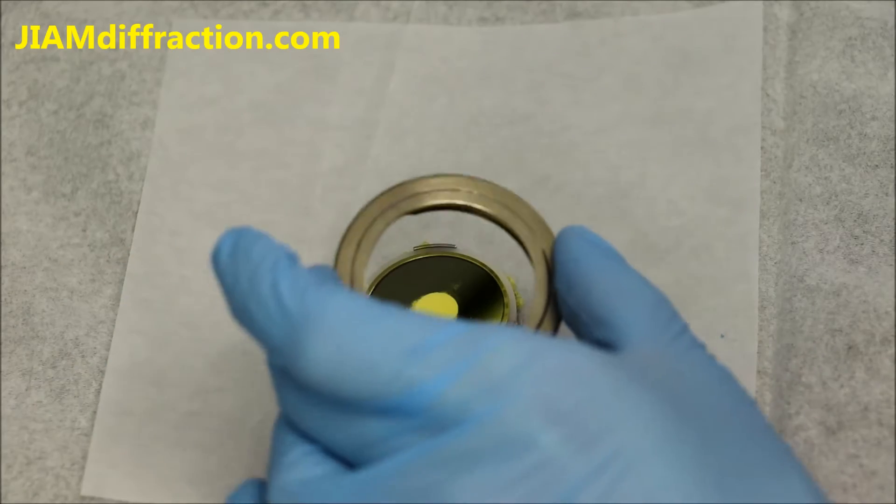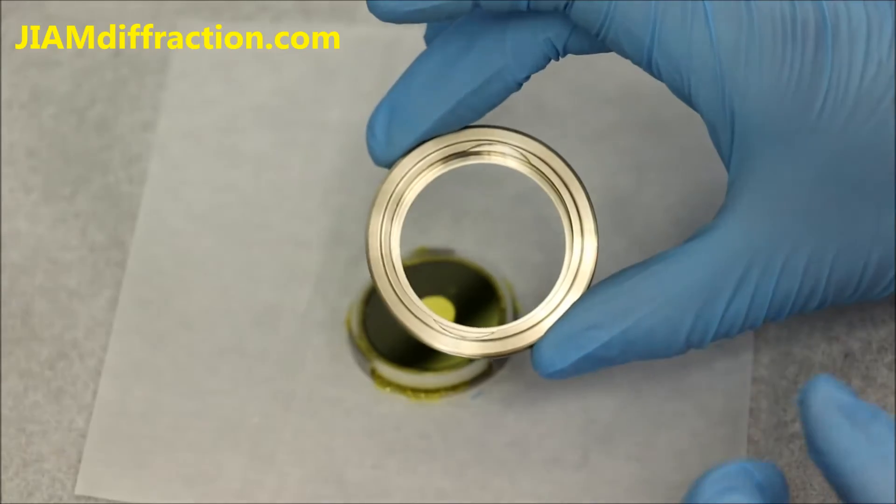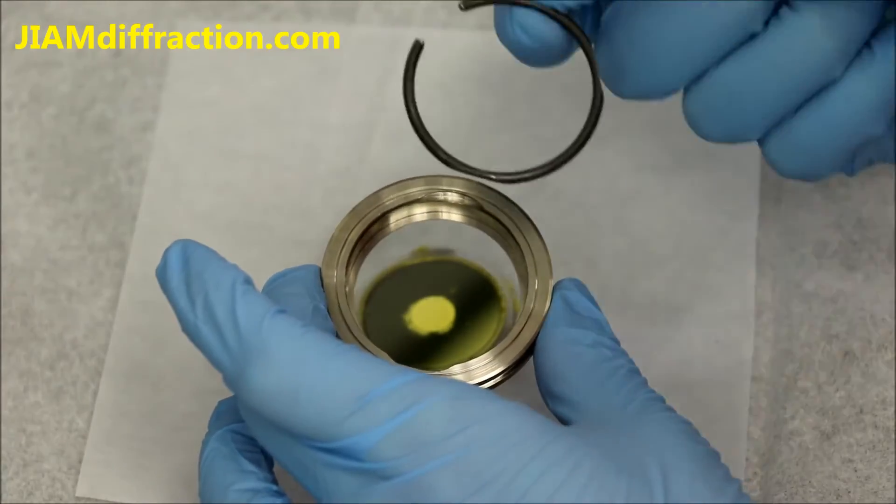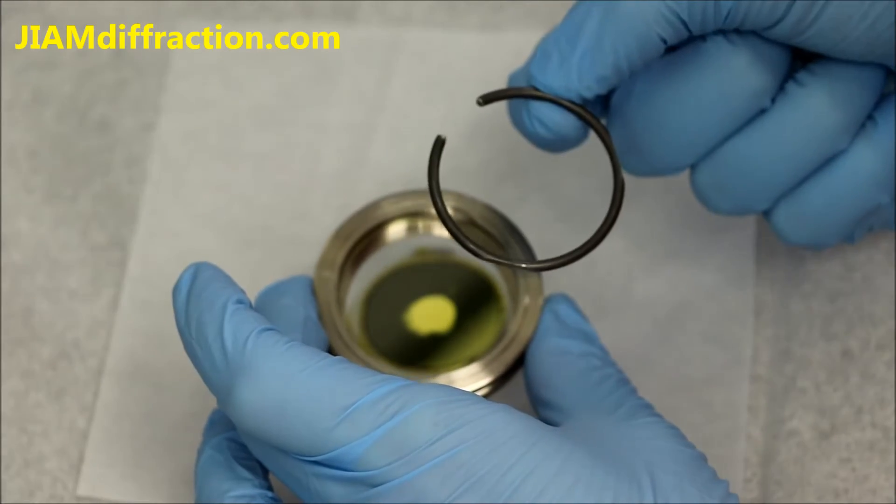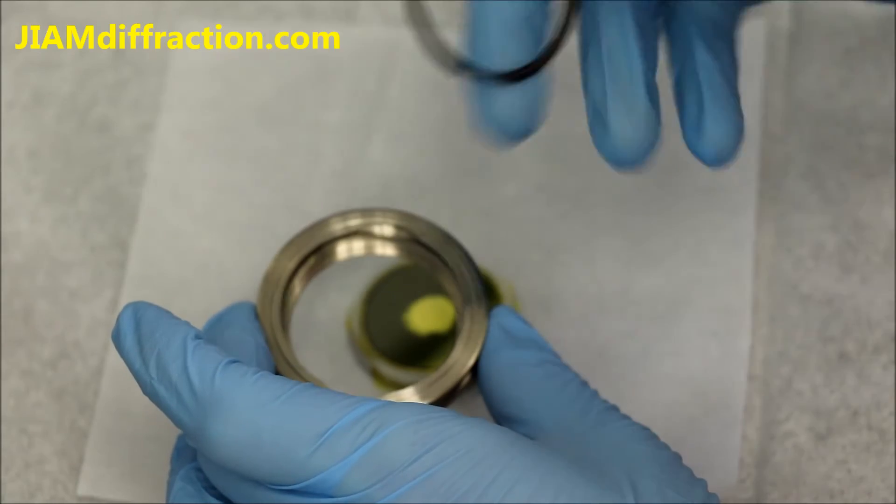But next we need this outer part of the sample holder. And if we look at it we will see that there are two notches cut in it. And this piece, which I did not show you before, the securing ring, will go inside here to lock the sample in place once we put it in.